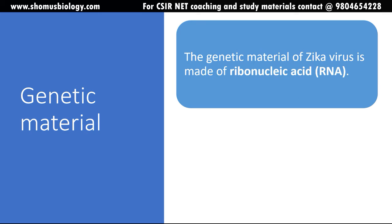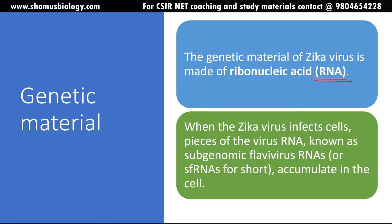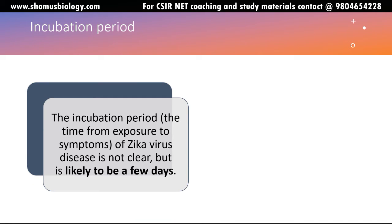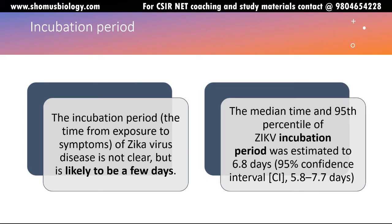The genetic material is RNA. When Zika virus infects a cell, pieces of viral RNA known as subgenomic flavivirus RNAs (sfRNAs) accumulate inside the cell. Zika virus is part of the flavivirus family, as we have discussed with other examples. These sfRNAs accumulate and can move from one cell to another and from one host to another. The incubation period is not well documented, but a study found the 95th percentile to be 6.8 days, with 95% confidence between five and eight days.